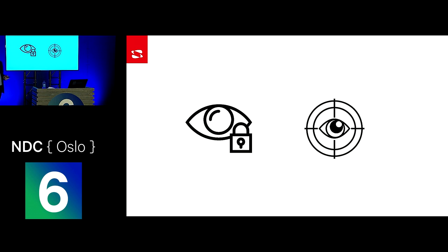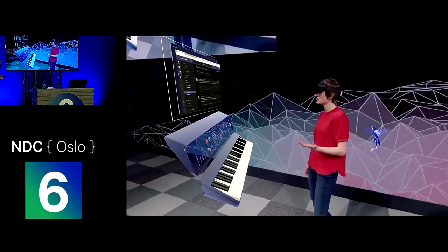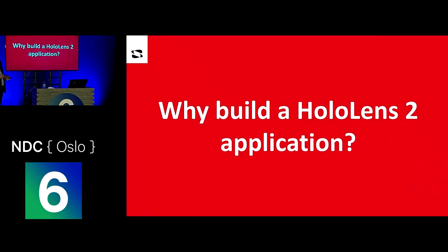It also has retinal sign-in. You put on the device, it recognizes your eyes, recognizes it's you, and signs you into Windows Hello. It has quite accurate eye tracking — I've had problems with eye tracking before because I wear glasses, but it works really well even with glasses on the HoloLens 2. It's hard to demonstrate in a video — you have to try it yourself. But when reading a paragraph of text, once you get to the bottom of the page it can start scrolling automatically. You get the feeling the device is reading your mind because it's responding to what you're doing in real time.